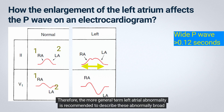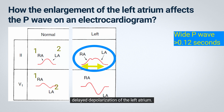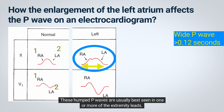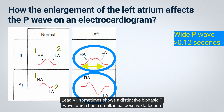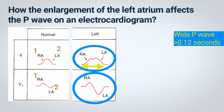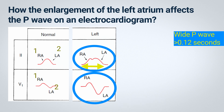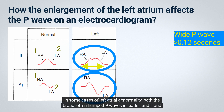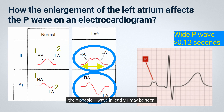Therefore, the more general term left atrial abnormality is recommended to describe these abnormally broad P-waves. The P-wave sometimes has a distinctive humped or notched appearance, and the second hump corresponds to the delayed depolarization of the left atrium. These humped P-waves are usually best seen in one or more of the extremity leads. Lead V1 sometimes shows a distinctive biphasic P-wave, which has a small initial positive deflection and a prominent wide negative deflection. The prominent negative deflection corresponds to the delayed stimulation of the enlarged left atrium.